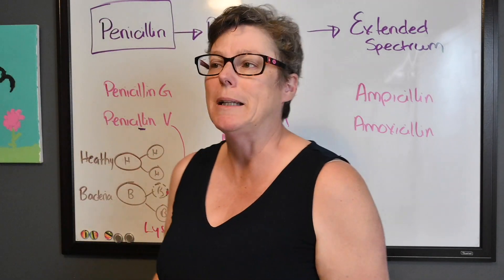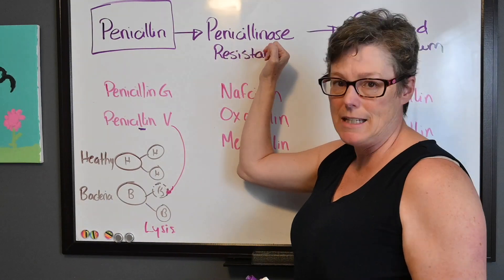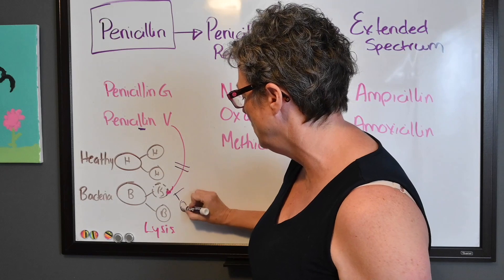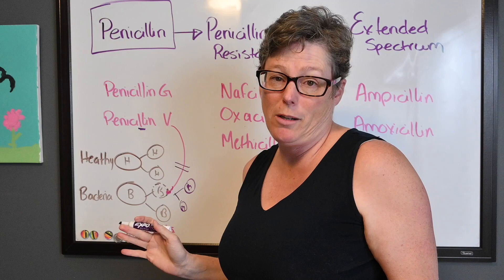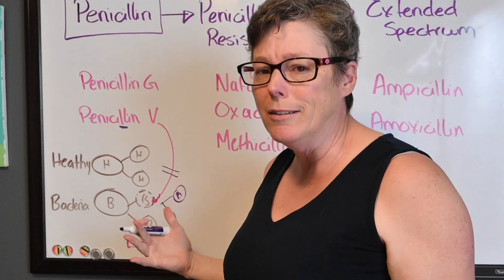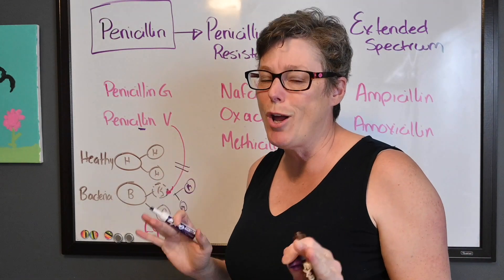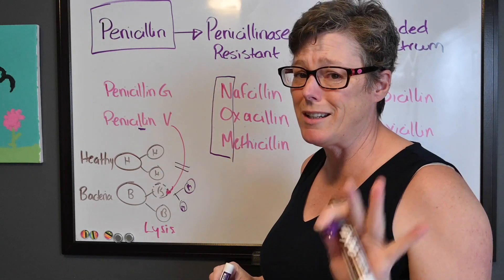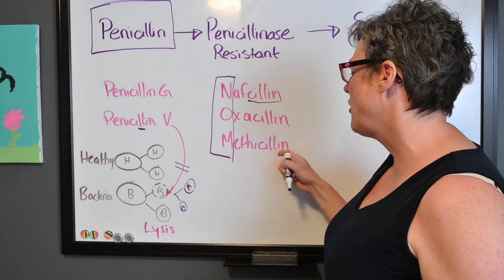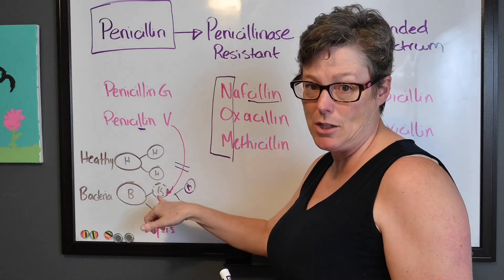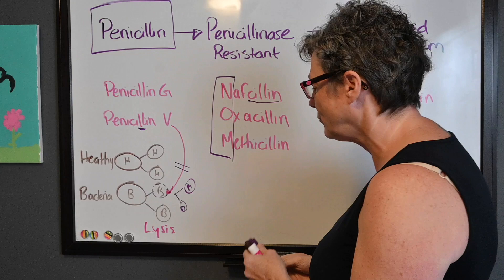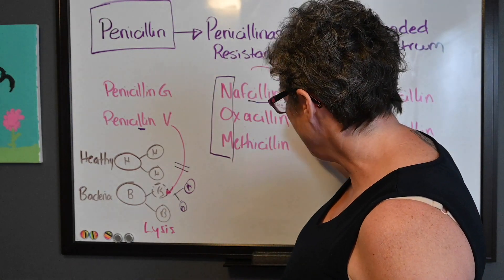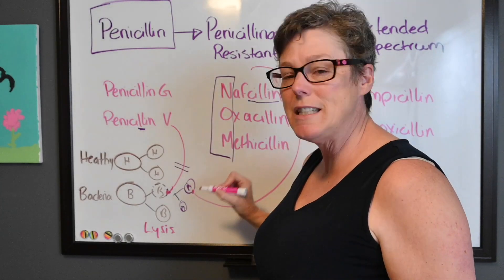Over time, bacteria got smart to the ways penicillin works and created penicillinase — an enzyme that would prevent penicillin from reaching the cell wall so the bacteria could continue to duplicate. We couldn't accept that, so we had to up our game. The next three drugs — nafcillin, oxacillin, and methicillin — were all created to get around that enzyme. The penicillinase-resistant antibiotics still attach to the same receptor site, but they are not detected by penicillinase.